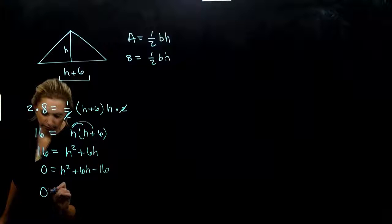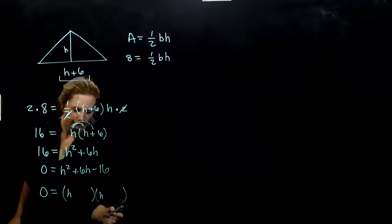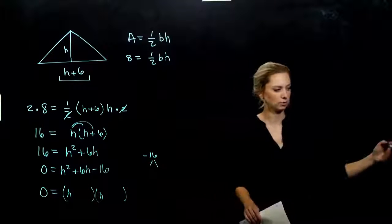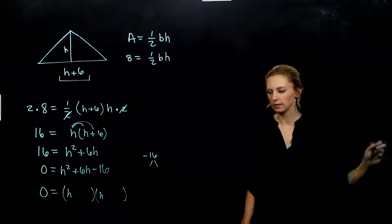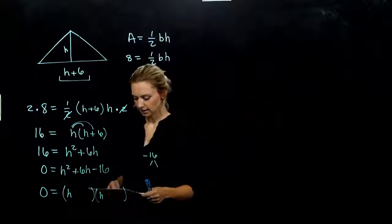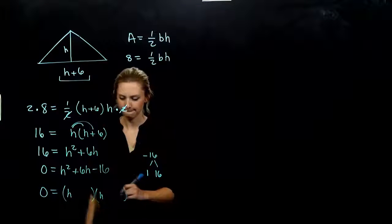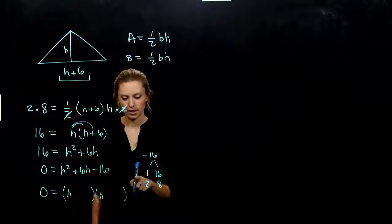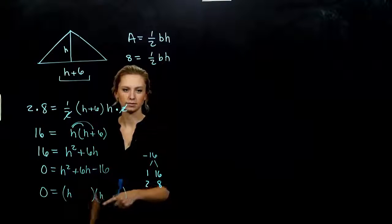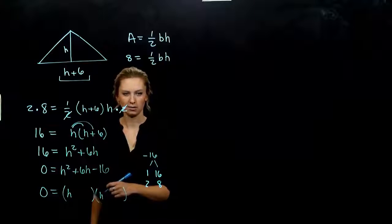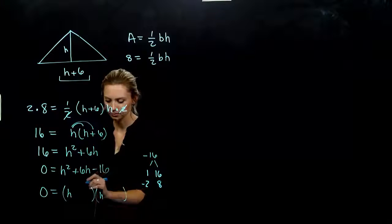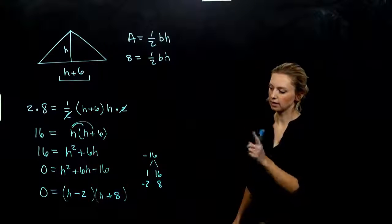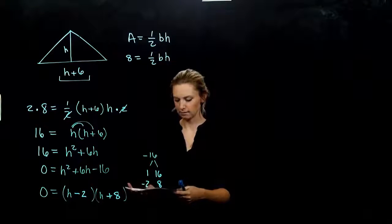We have a trinomial with a coefficient of 1 on the front. We need factors that multiply to negative 16 and add to positive 6. The combination of 2 and 8 works: 8 plus negative 2 gives 6, and 8 times negative 2 gives negative 16. So the larger one is positive and the smaller one is negative.